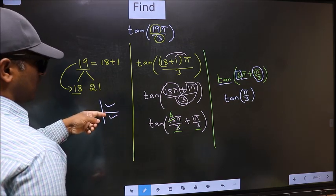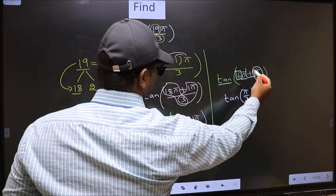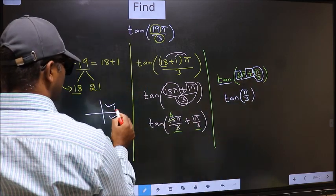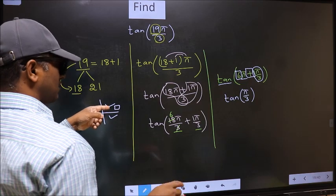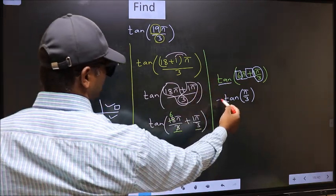To select the quadrant, we should look at this symbol. Here we have plus, which means the angle lies in the first quadrant. In the first quadrant, tan is positive, so we should put plus.